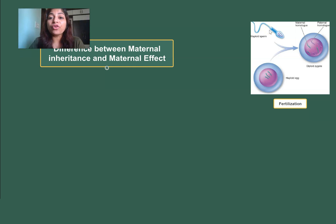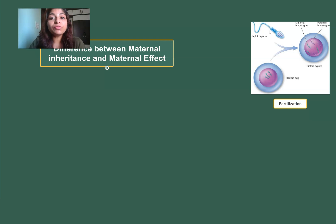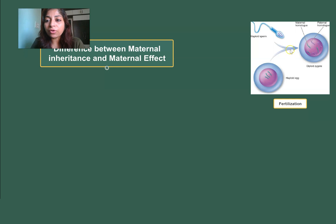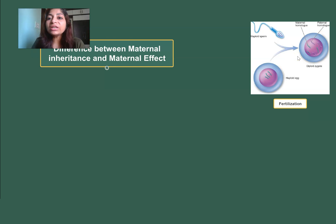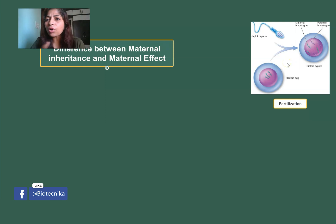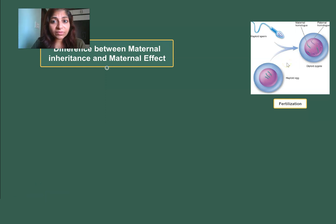When injecting, the sperm will only inject its nucleus inside the egg. So the zygote which has formed gets its entire cytoplasmic content coming directly from the mother. Whatever is present in the cytoplasm is coming from the mother, and there are different organelles present in that cytoplasm.